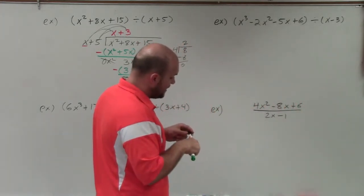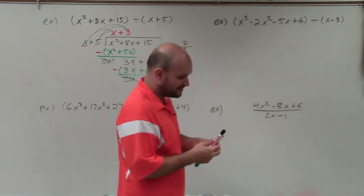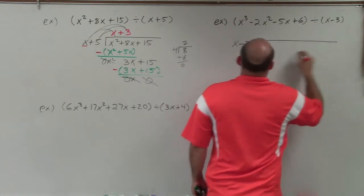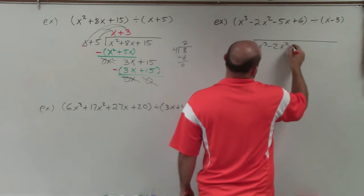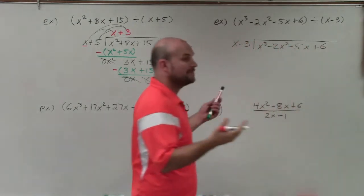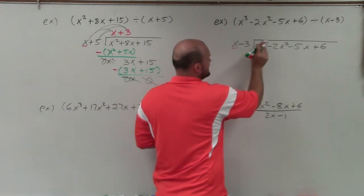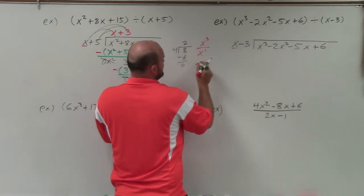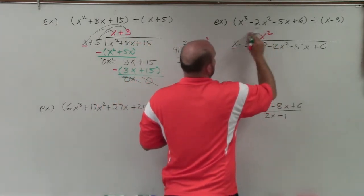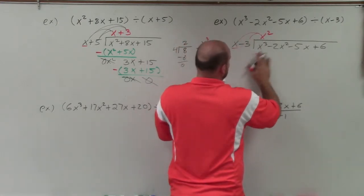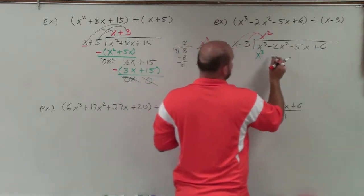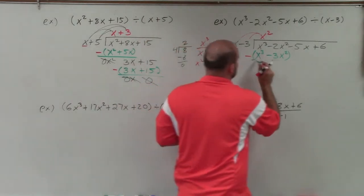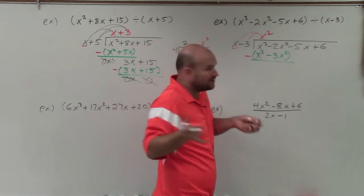The next problem has an extra term: x cubed minus 2x squared minus 5x plus 6 divided by x minus 3. We rewrite this using our long division algorithm: x minus 3 divides into x cubed minus 2x squared minus 5x plus 6. We start with the first term x and divide into x cubed. Using rules of exponents, x divides into x cubed gives x squared. Then multiply x squared by both terms: x squared times x is x cubed, and x squared times negative 3 is negative 3x squared. Put them in parentheses and subtract — you're subtracting the whole row. x cubed minus x cubed is 0.